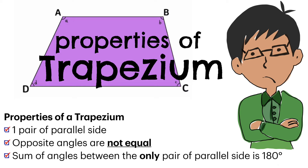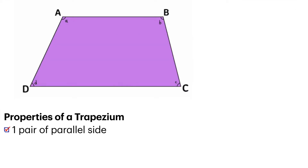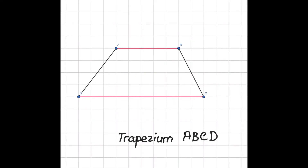In this video, I'll be going through the properties of a trapezium. Let's start off with the first property: there is only one pair of parallel sides. From the image that you see, line AB is parallel to line DC, and that's all.